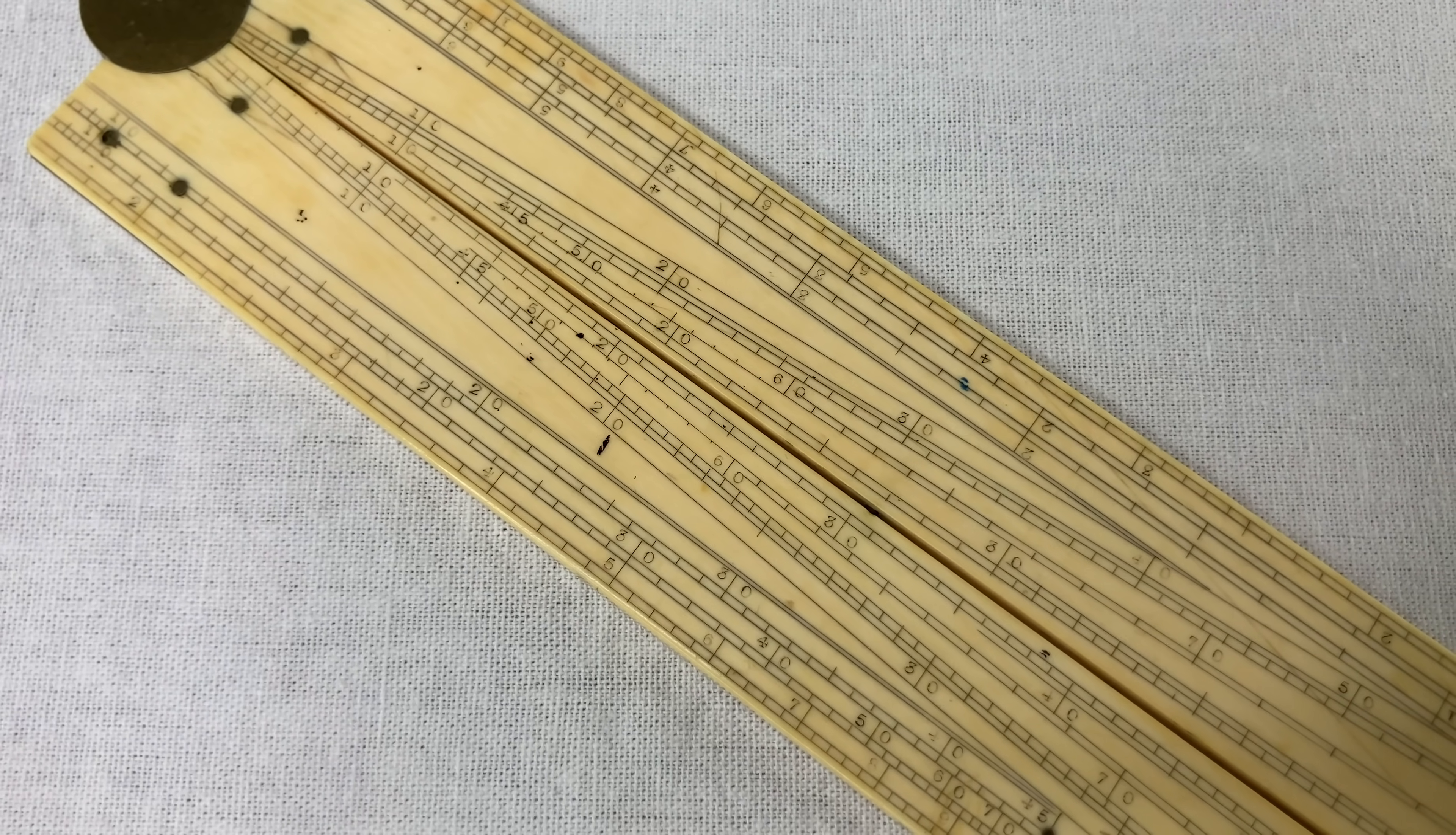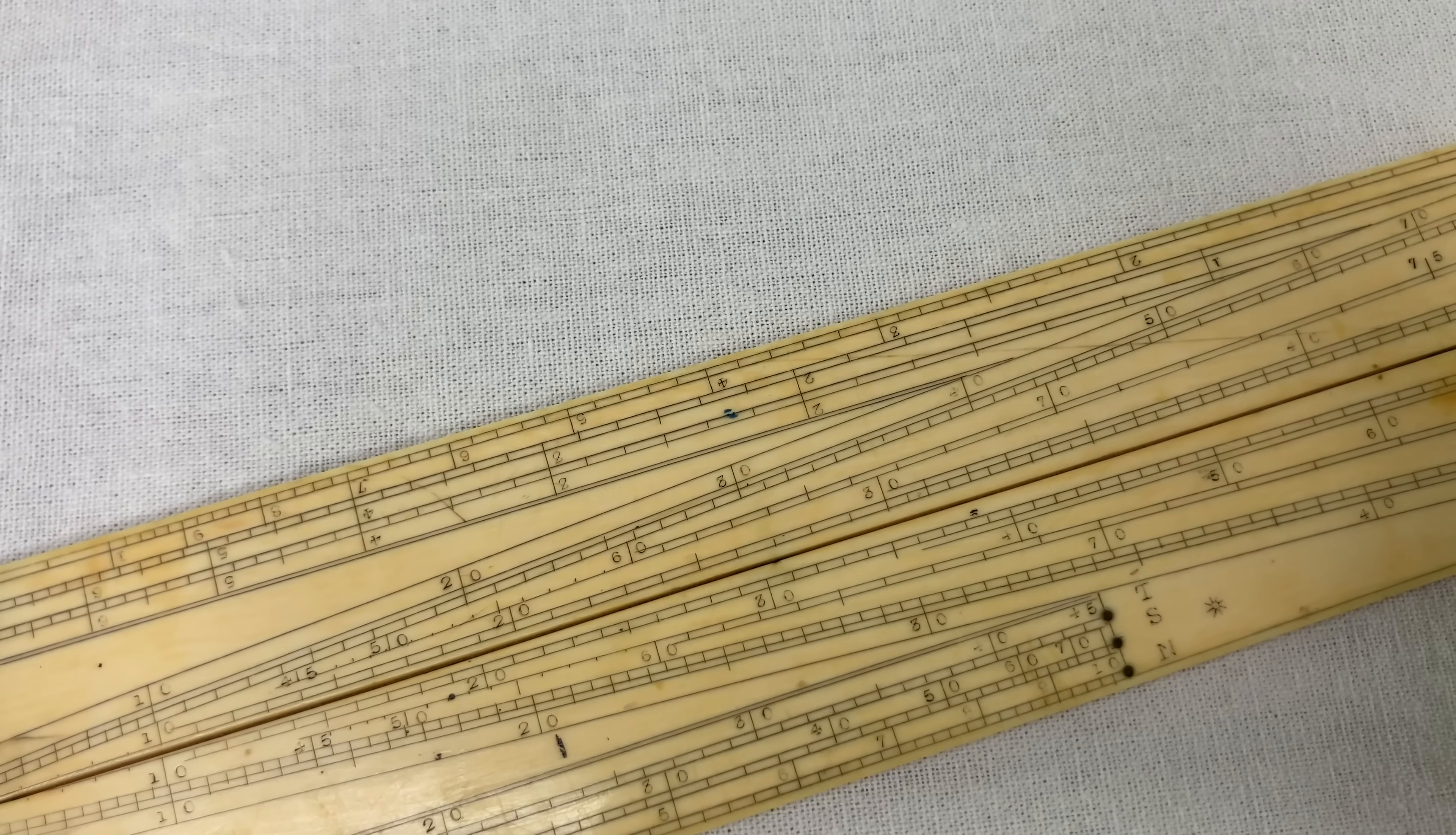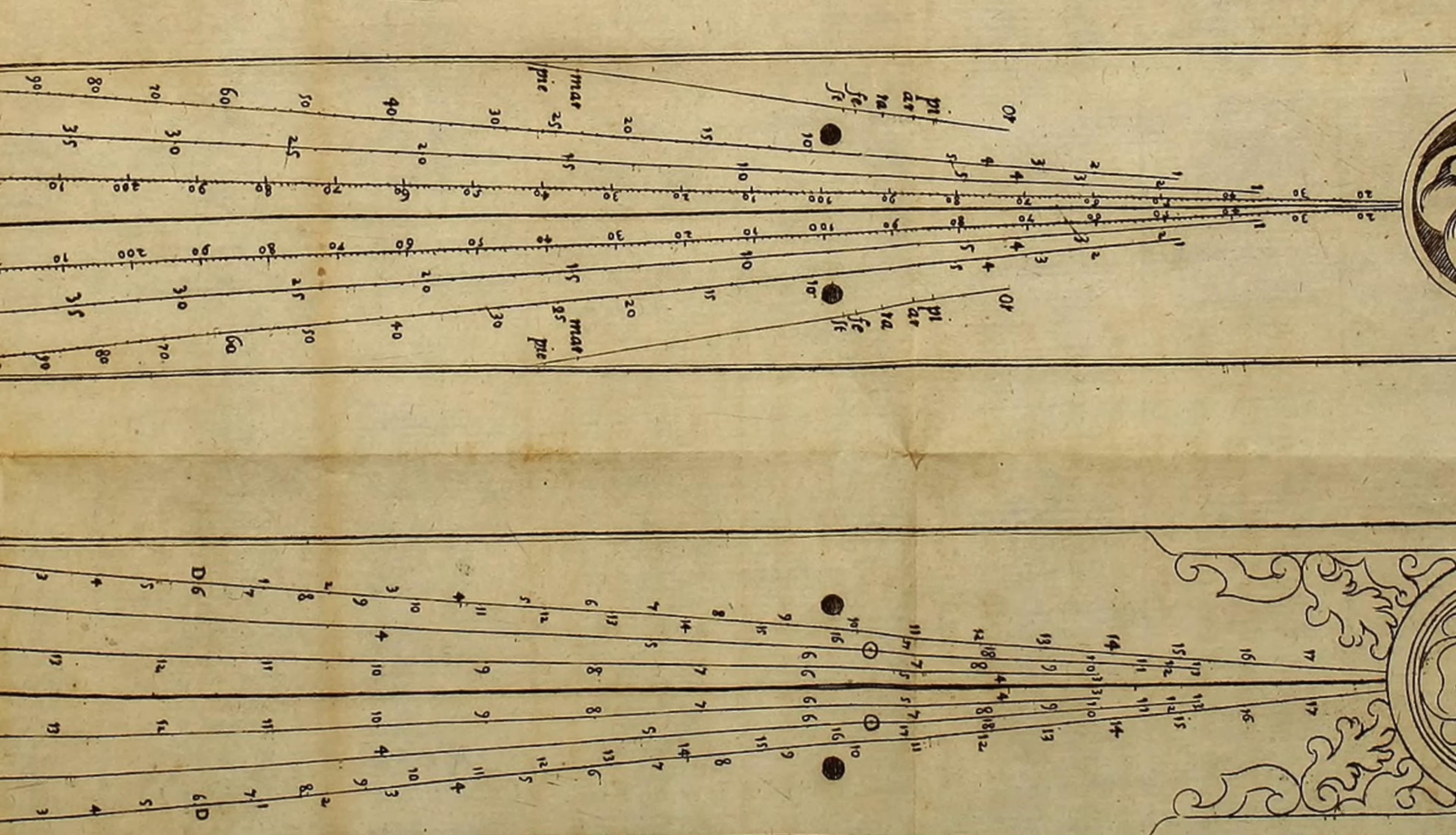I said it does cosines, but really it does secants. That's what the S scale on the front is for. And the two T scales are like that, but for tangents. One of them is for angles measured zero to 45 degrees, and the other one goes from 45 to about 75. All of these scales basically match Galileo's design from the 1590s. And after that point, there was only one major innovation, and it came from the north.